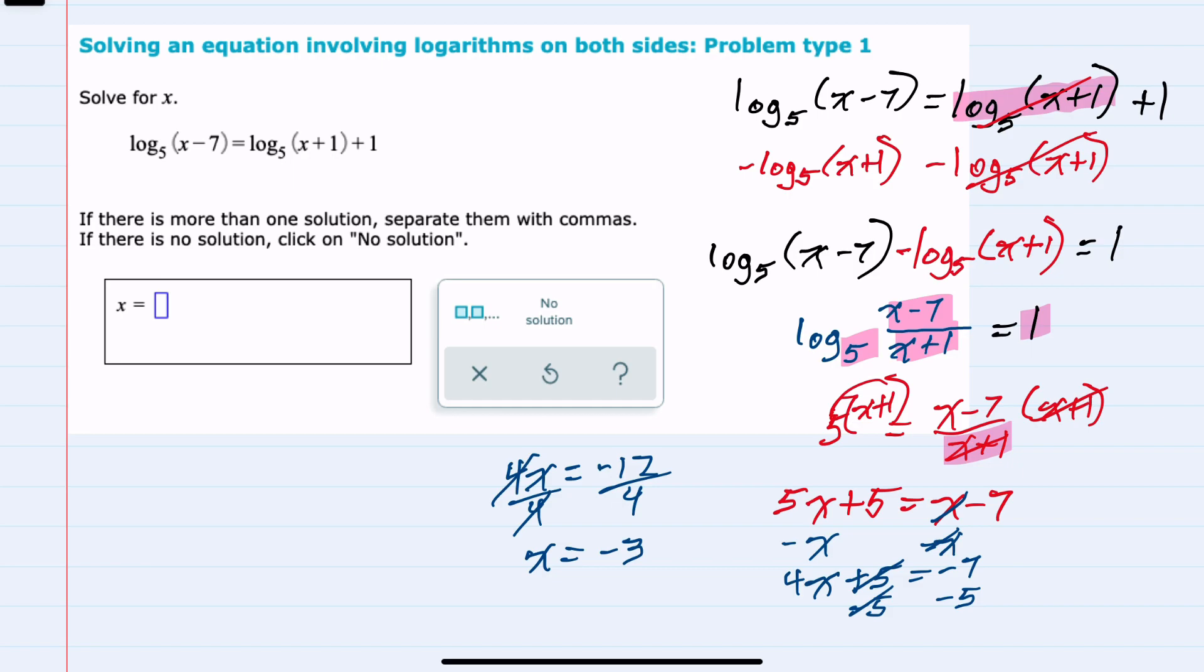However, when I substitute x equals negative 3 back in, I end up taking the log of negative 3 minus 7 or negative 10, and also taking the log base 5 of negative 3 plus 1 or negative 2 with the plus 1 on the outside. We cannot take logarithms of negative numbers, and that's why we wanted to test this solution. It did not work, so even though we correctly found a potential solution, upon testing, it gave us the log of negative numbers, so this would be no solution.